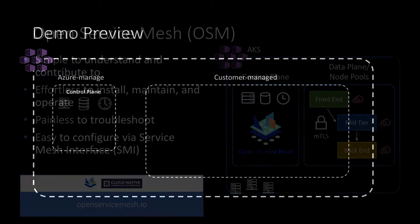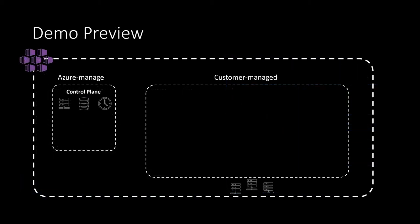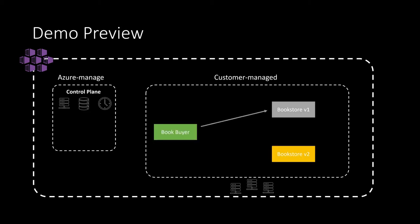In the following demo, we're going to show you how you can easily enable the OSM add-on to an AKS cluster and configure it to protect existing services running in the cluster. We will first be deploying a sample bookstore application to the cluster, which will deploy two initial services: Book Buyer and Bookstore V1. The Bookstore V2 service will be deployed later in the demo to showcase the traffic split functionality.